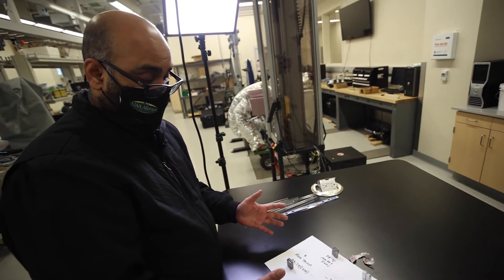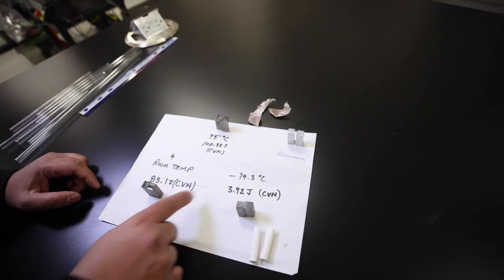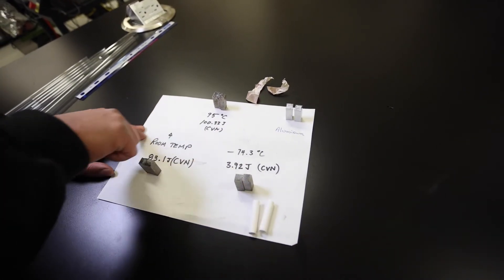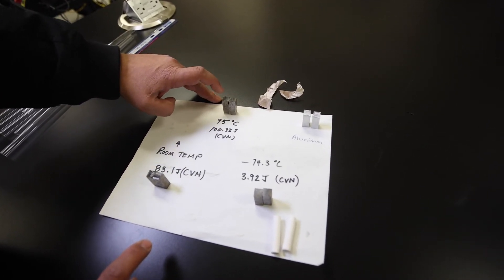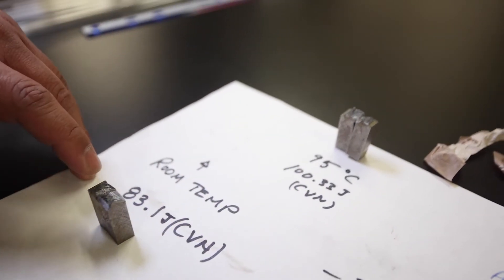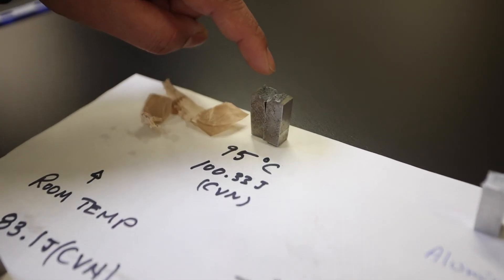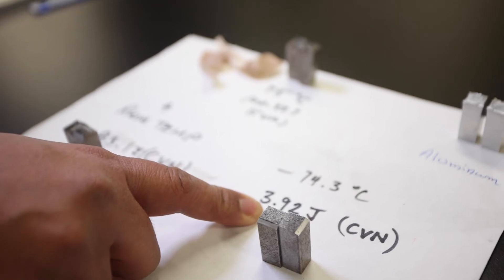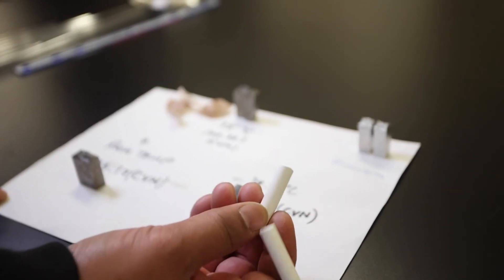Here are the specimens after we dropped the hammer on them and broken them into two pieces. This is the carbon steel at negative 74 degrees Celsius, this is the same carbon steel at room temperature, and that's the same carbon steel at 95 degrees Celsius. As the temperature went down, you can see the fractured surface change. This surface is more ductile — it's not a clean cut — and you can see it becoming less ductile until it became brittle. A lot of energy went into the ductile ones: 100 joules, 83 joules. But as you reduce the temperature, it went down to about 4 joules with an almost clean cut, just like a brittle material — very similar to how we broke the chalk piece.